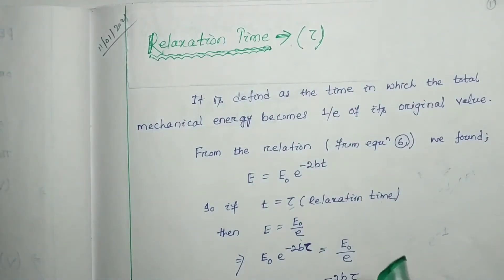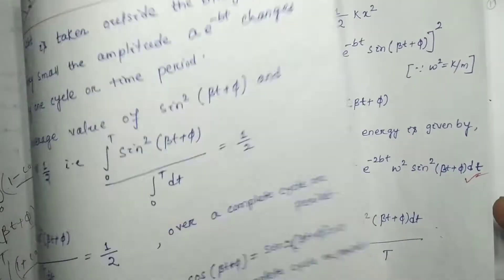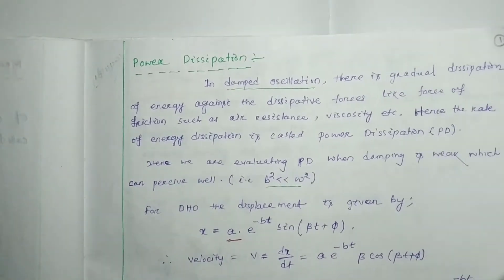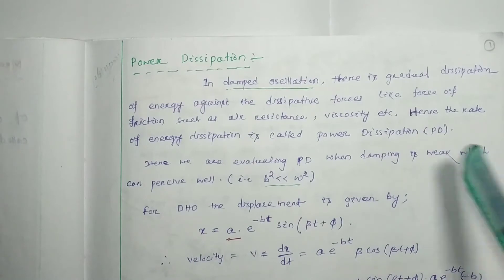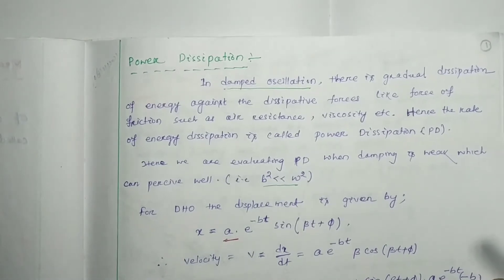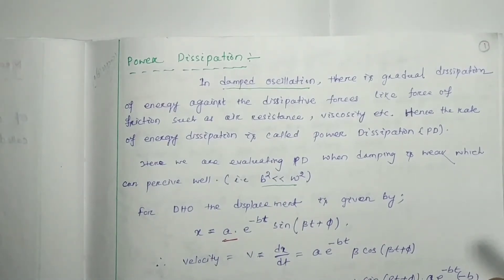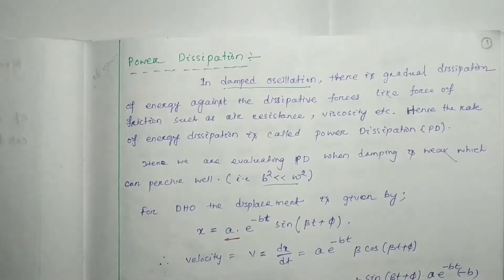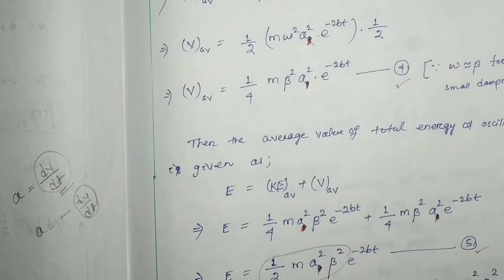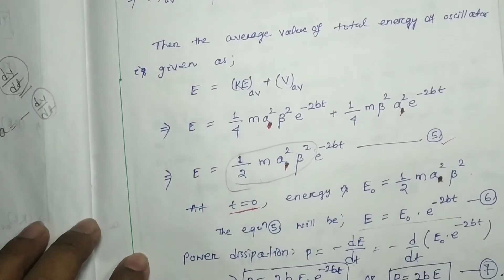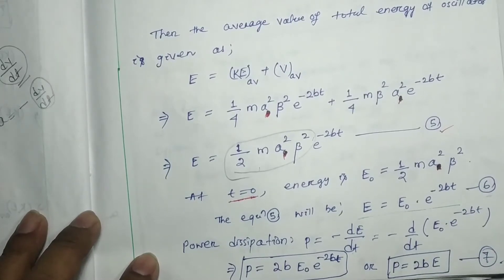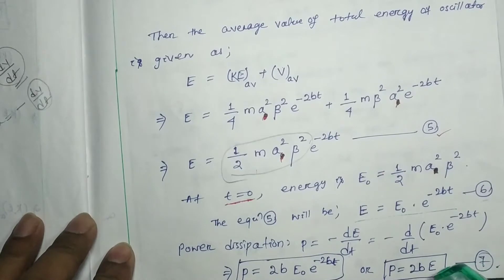In our previous lecture, lecture number 10, we discussed power dissipation — that means how much energy or power is going to be dissipated when an oscillator oscillates per second. We found that the power dissipation is equal to minus d by dt, that is 2B into E, equation number 7.